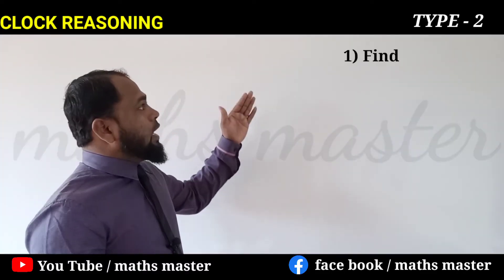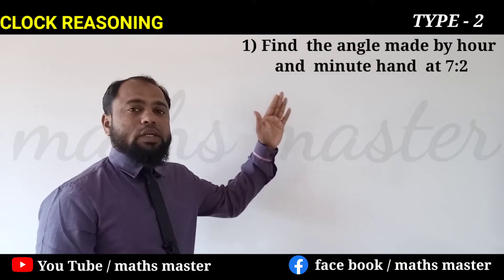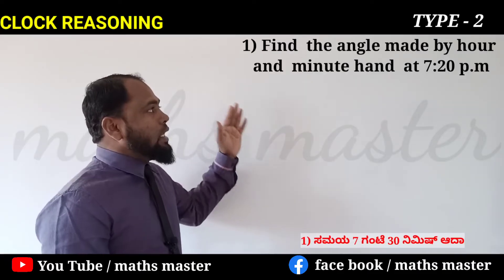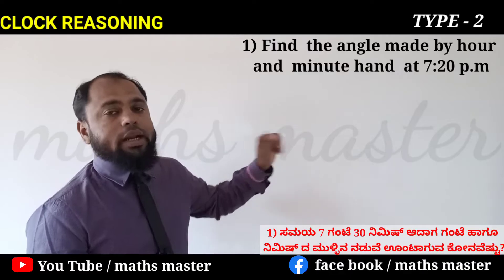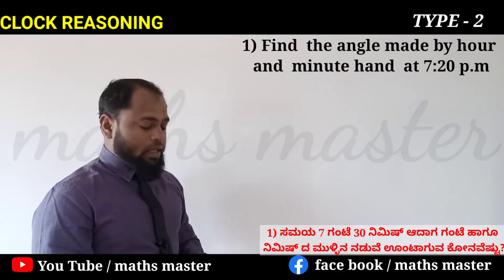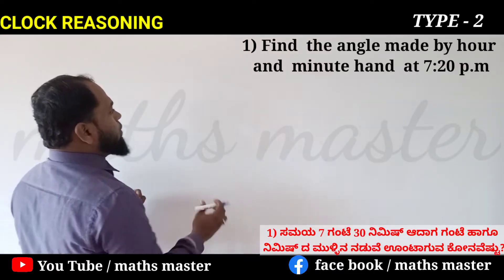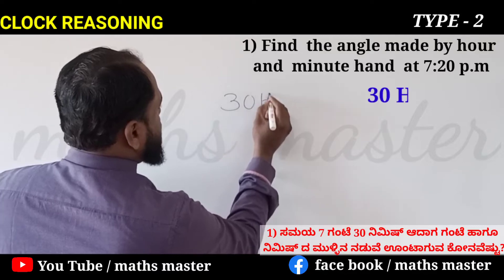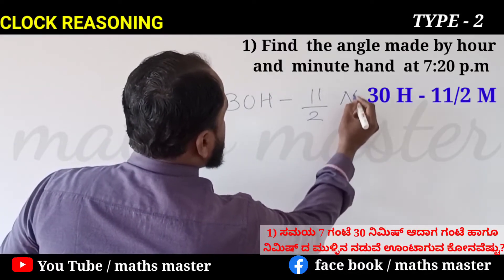Find the angle made by the hour and minute hand at 7:20 PM. This is a simple formula: 30H minus 11 upon 2 into M.